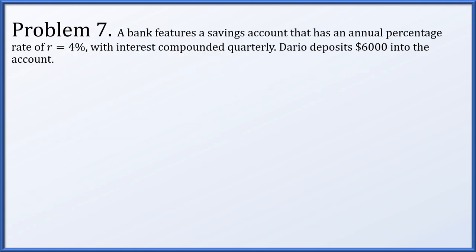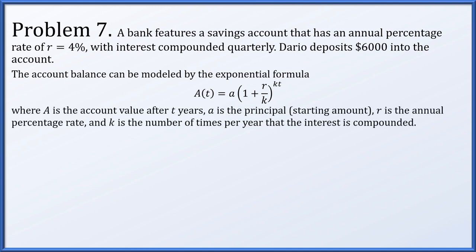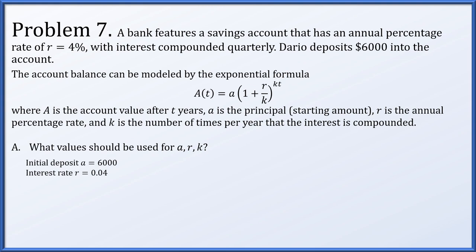Problem 7. The bank features a savings account with an annual percentage rate of 4%, with interest compounded quarterly. Daario deposits $6,000. The account balance is modeled by A(t) equals a times (1 plus r over k) to the kt, where A is the account value after t years, a is the principal, r is the annual percentage rate, and k is the number of times per year interest is compounded. The initial deposit a is $6,000, the interest rate r is 4% or 0.04, and since it's compounded quarterly, k equals 4.